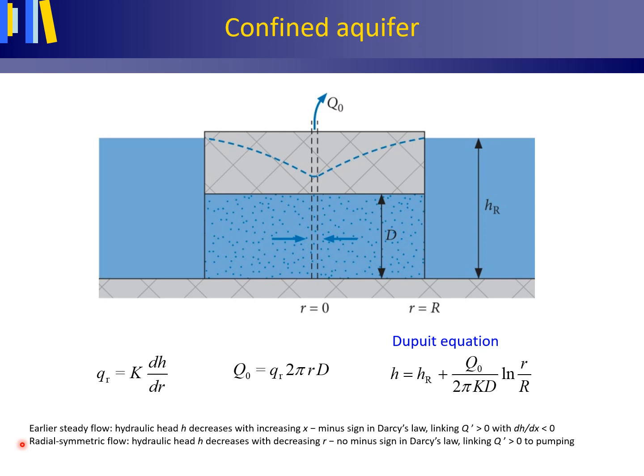As water is pumped up, thus flowing upward in a pumping well — that is, in a positive z direction — it is preferred to assign a positive sign to this volume flux or discharge Q0 at the centre of the pumping well. Because then both Q0 and the hydraulic gradient are positive in the direction of flow, the minus sign must be dropped in this radial symmetric version of Darcy's law. Thus Darcy's law then is as stated here to the left.